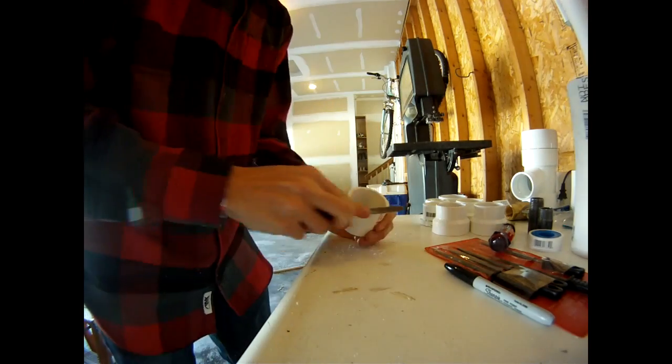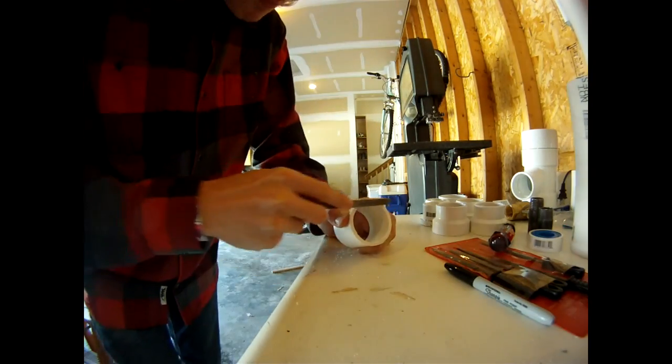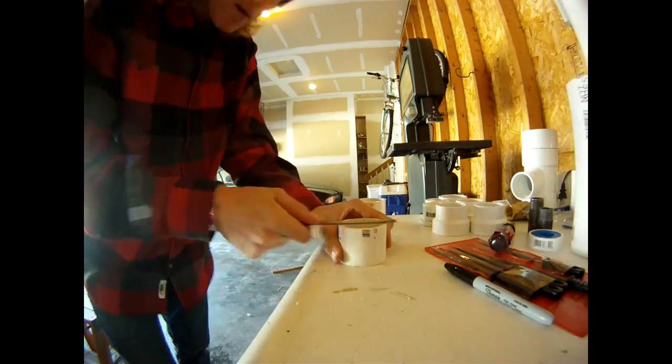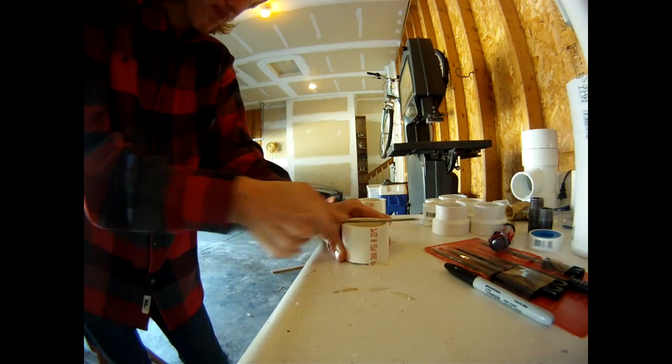Next, use your set of files to file down any burrs or rough edges on the PVC so that it will sit flush once we prime and cement it into place.